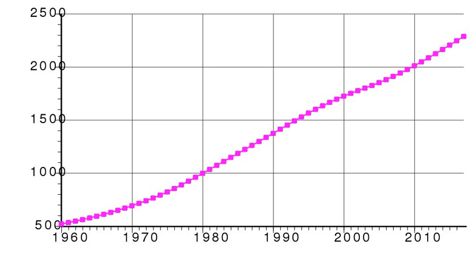Life expectancy at birth — total population: 63.3 years; male: 61.2 years; female: 65.5 years. HIV/AIDS adult prevalence rate: 22.8%. People living with HIV/AIDS: 380,000. Deaths due to AIDS: 4,100. Physicians' density: 0.38 physicians per 1,000 population.